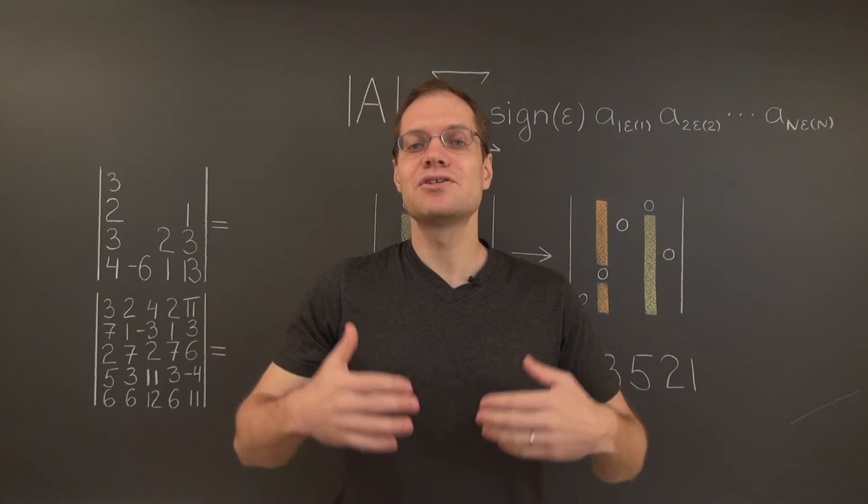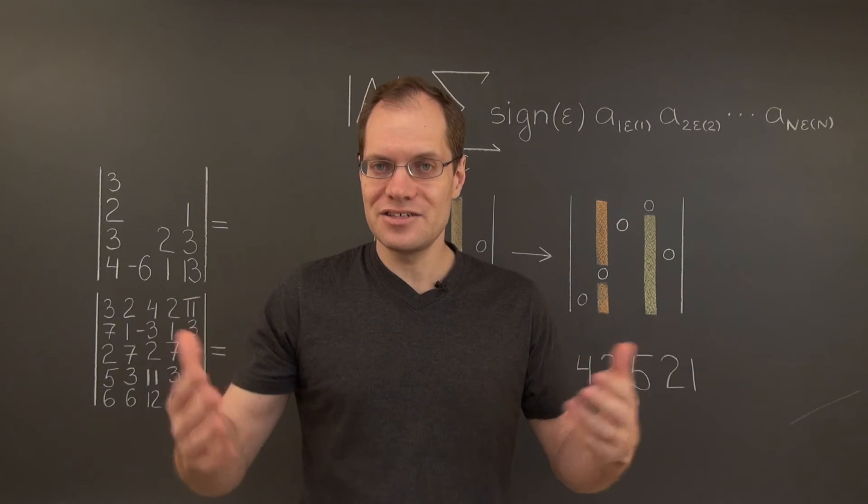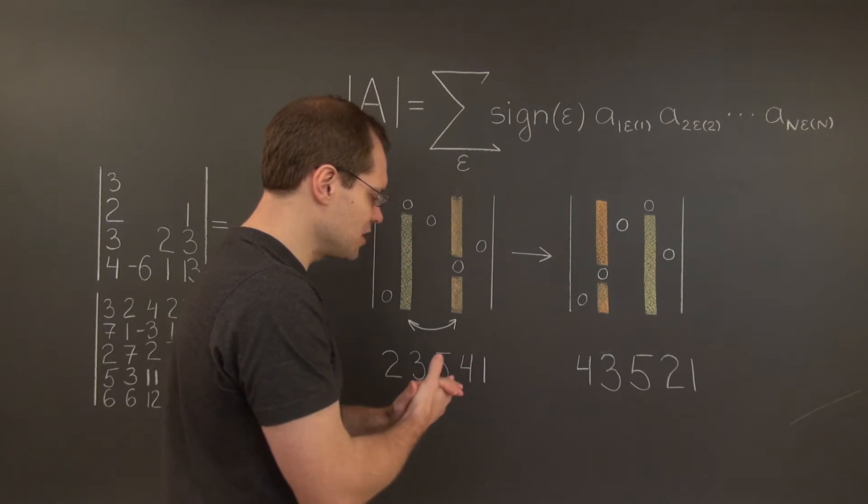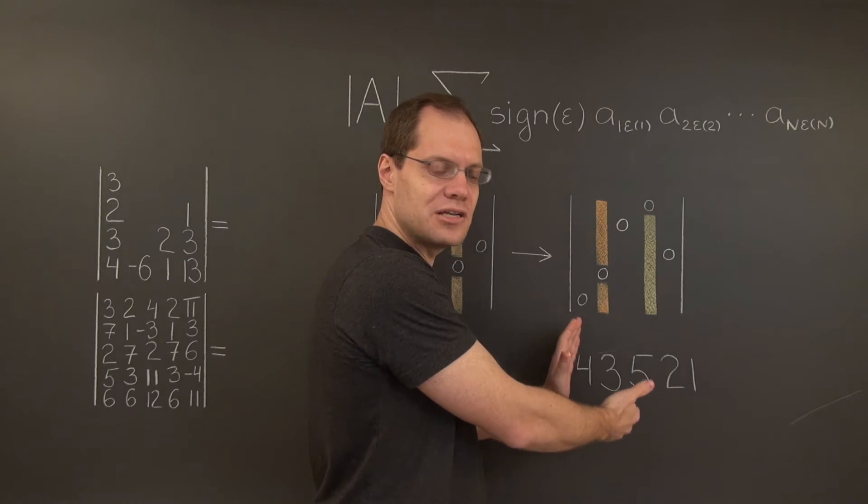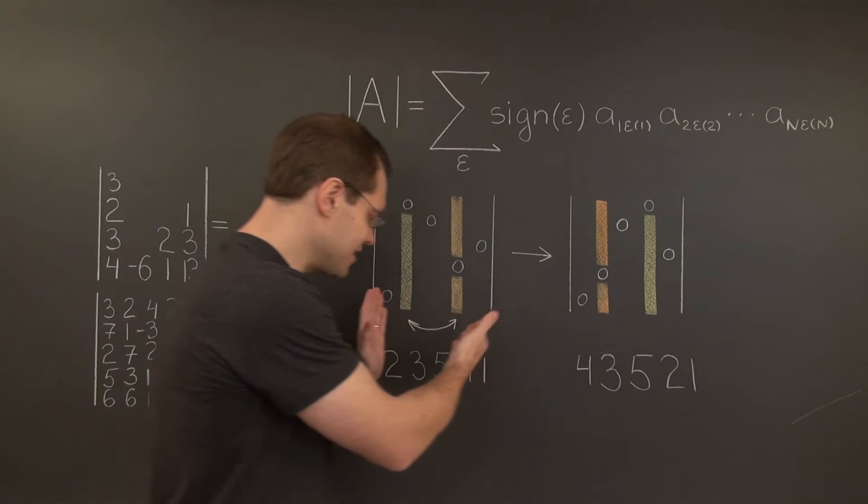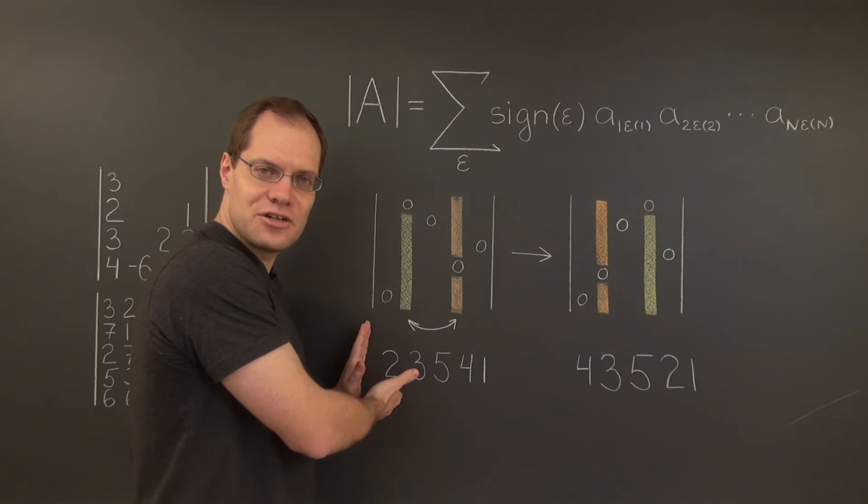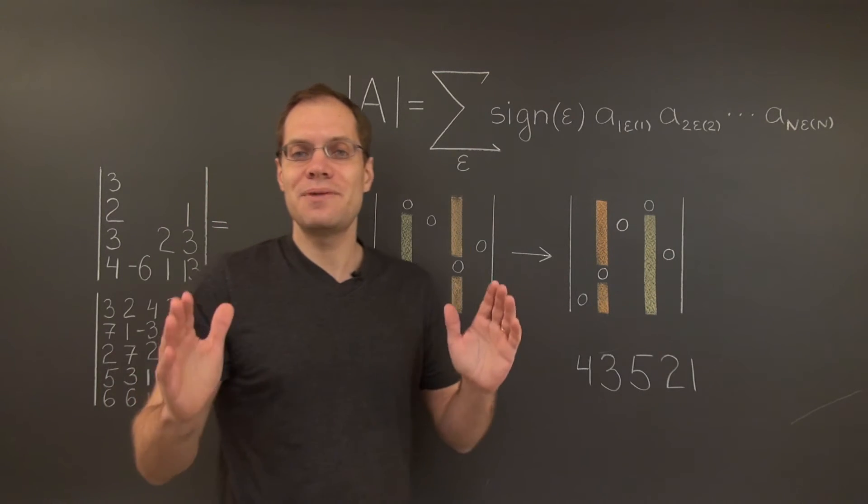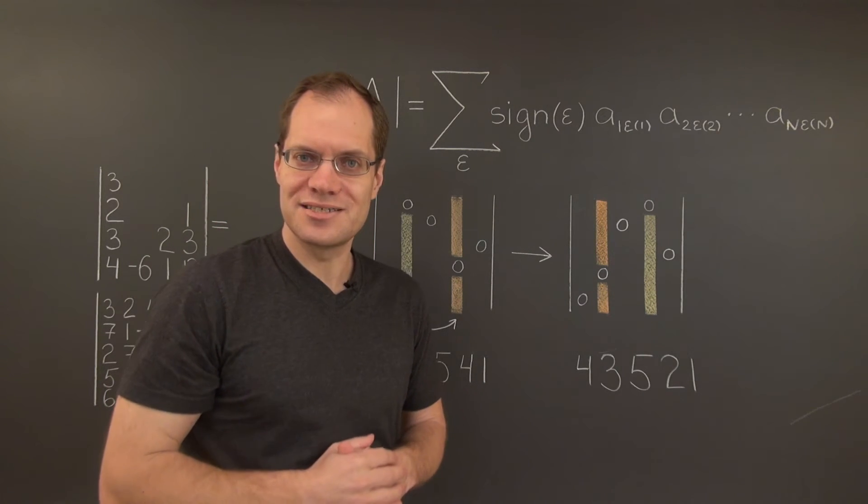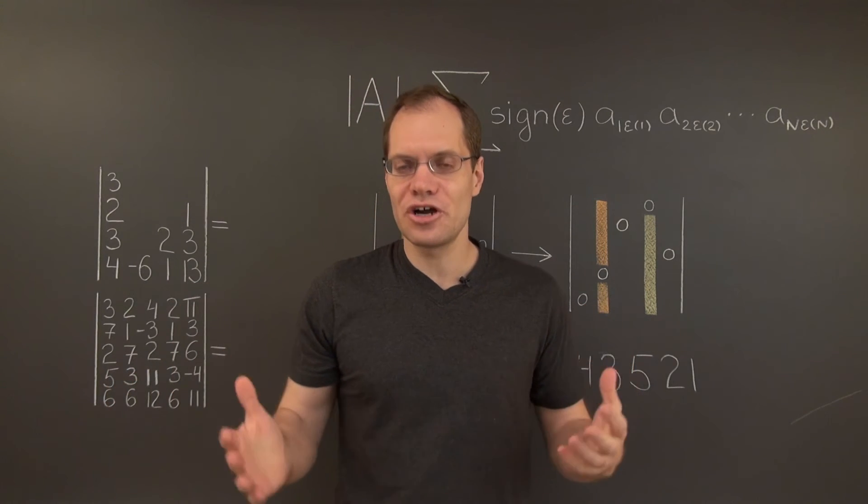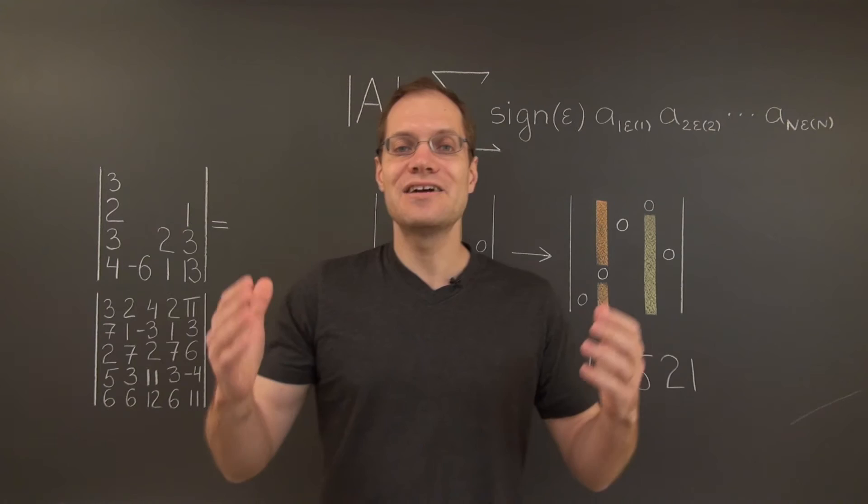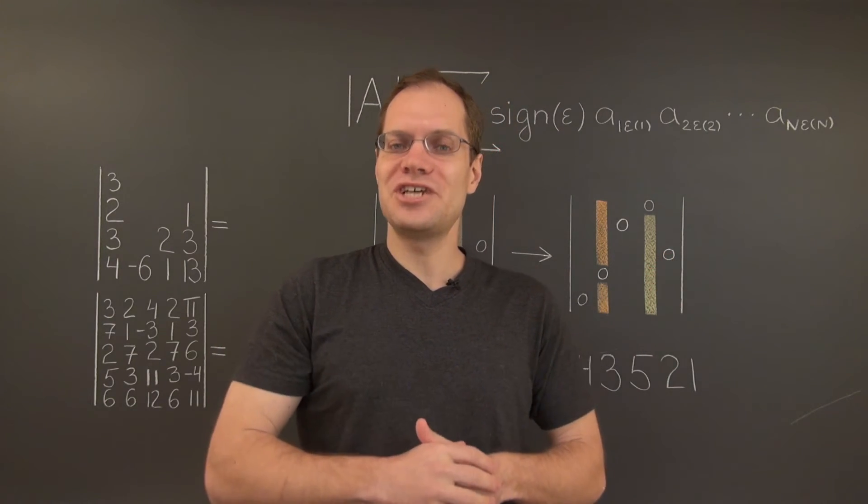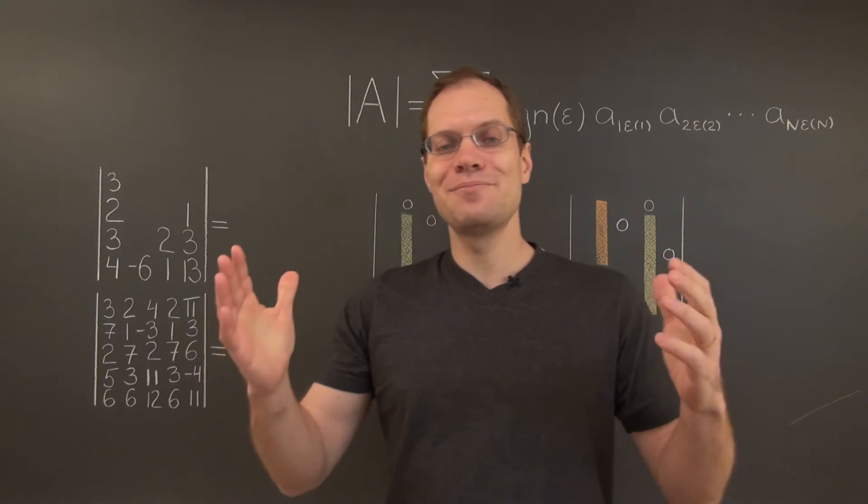And of course that happens for all the patterns in the determinant. When you switch two columns, the corresponding term will be associated with a permutation that's exactly one switch away from the original permutation. That's what I mean by saying everything works out just right. And so each term in the determinant will change its sign. And therefore, the determinant will change its sign. And that completes the proof.